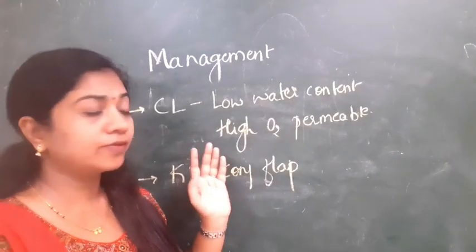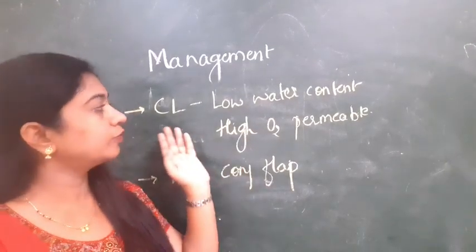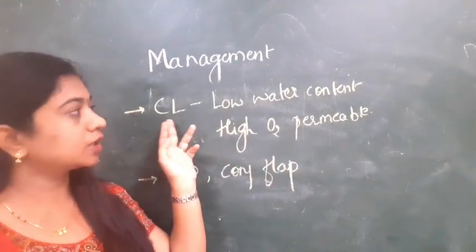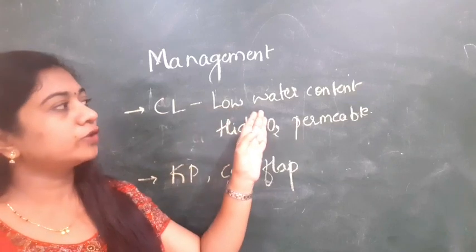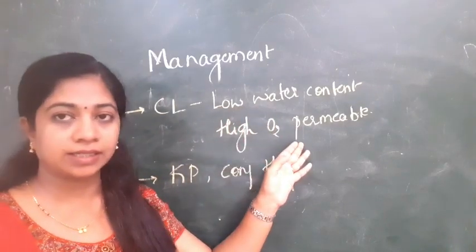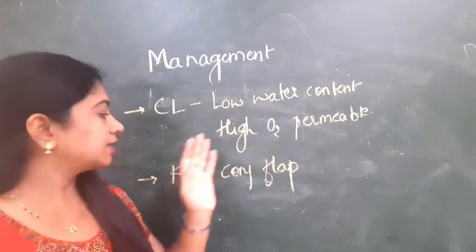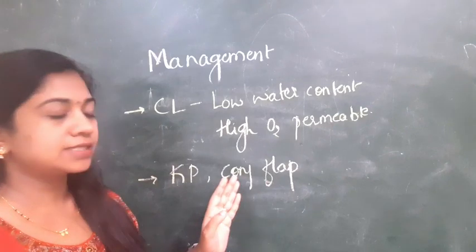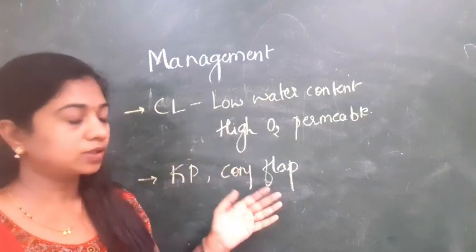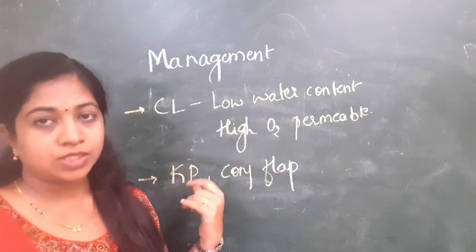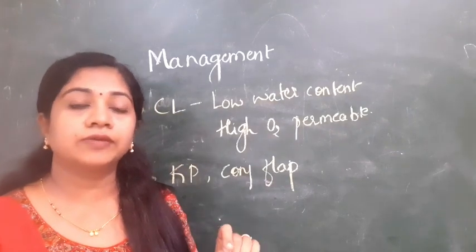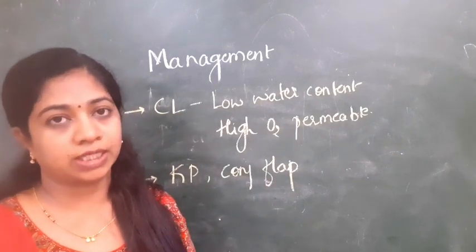If the cornea is not healing despite treatment, you can go for a conjunctival flap or penetrating keratoplasty as a last resort. These are the treatment options available for trophic corneal ulcer.